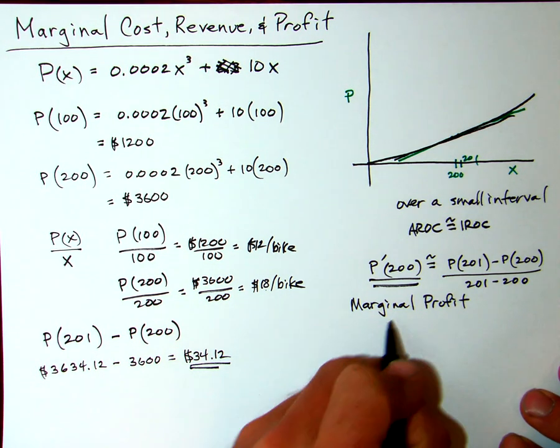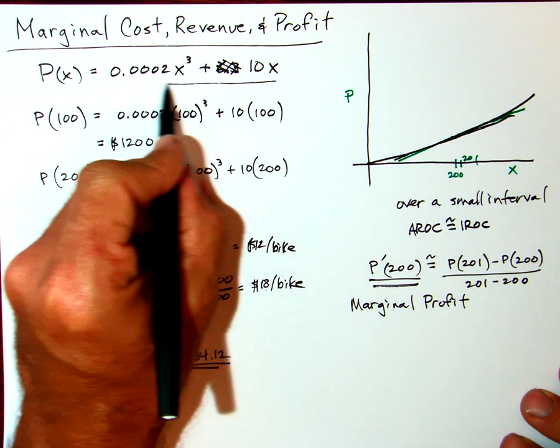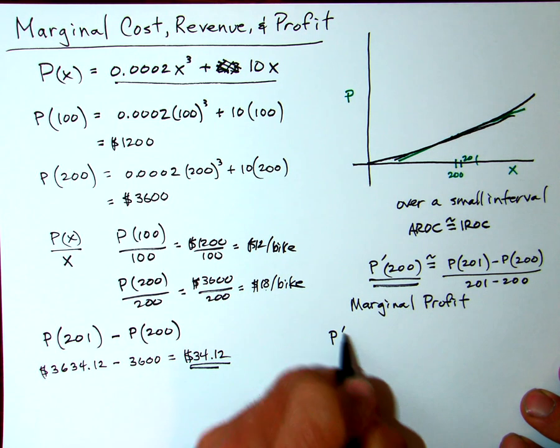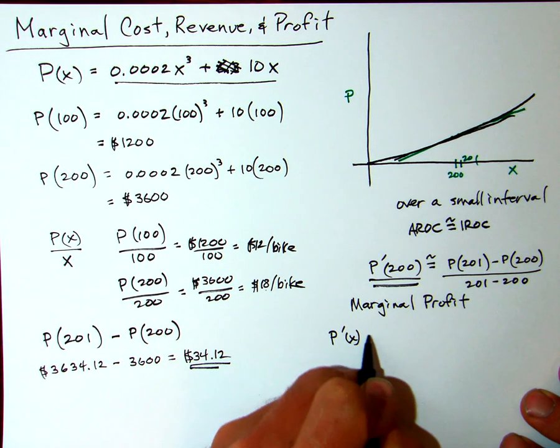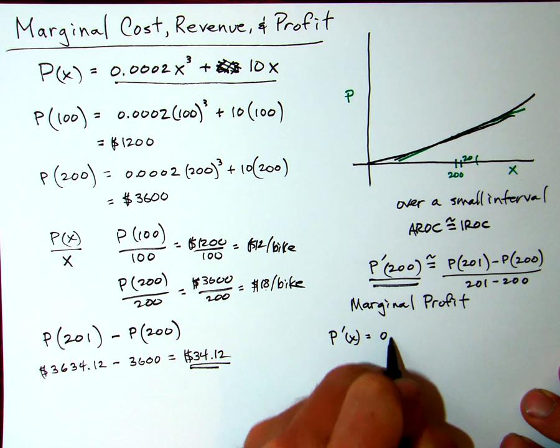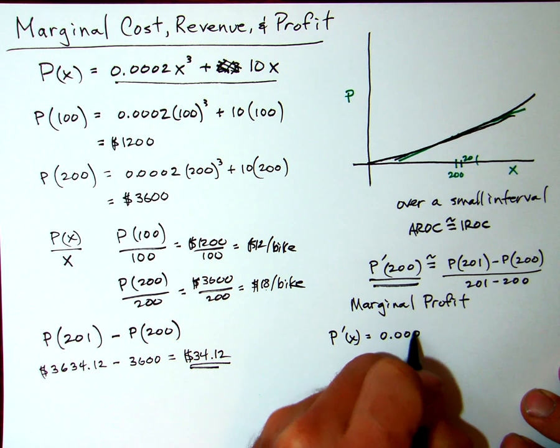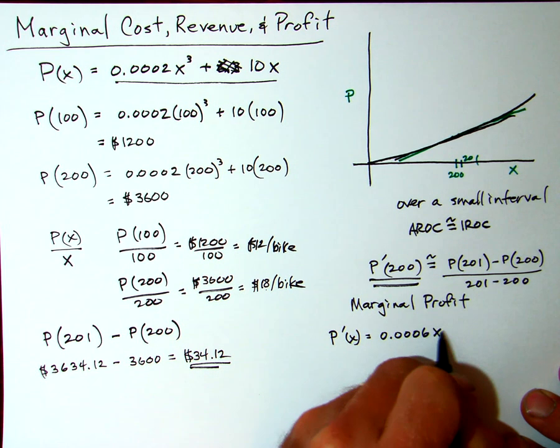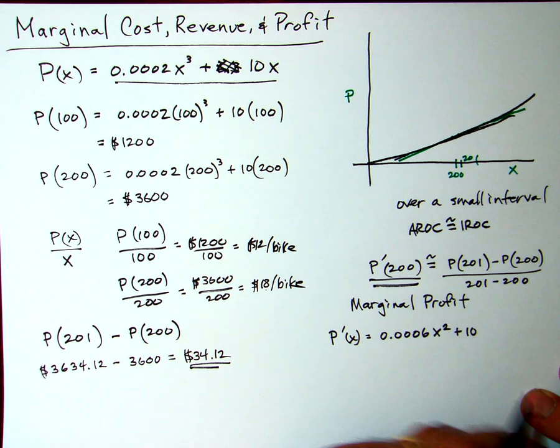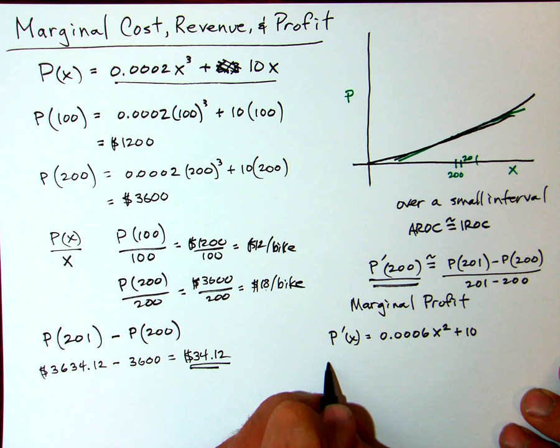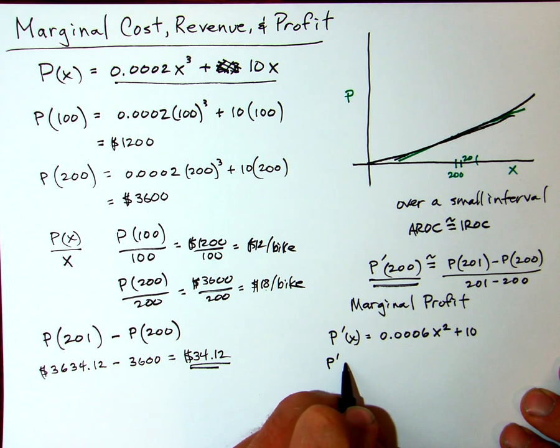Here's our function up here. So P'(x) should be 0.0006x² + 10. Derivative of 10x is just 10.